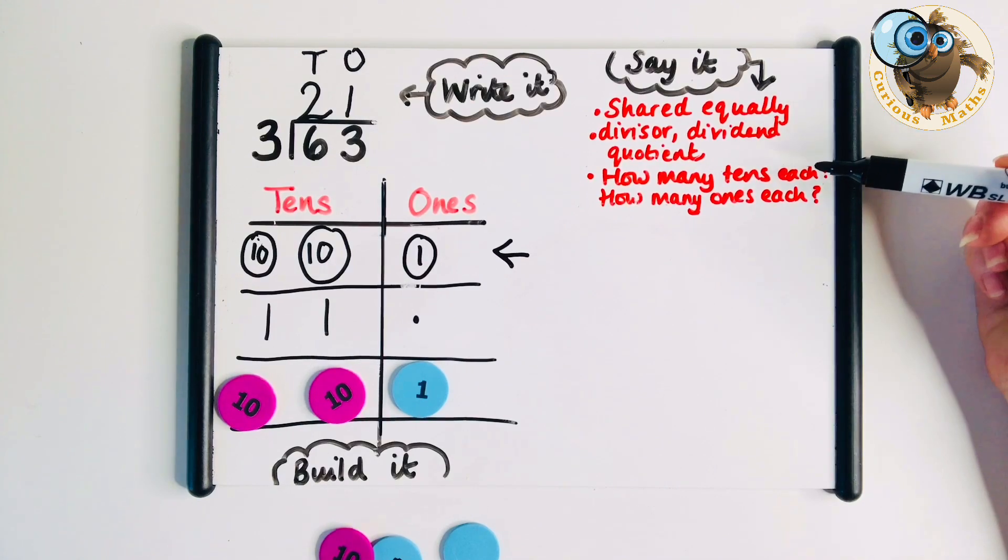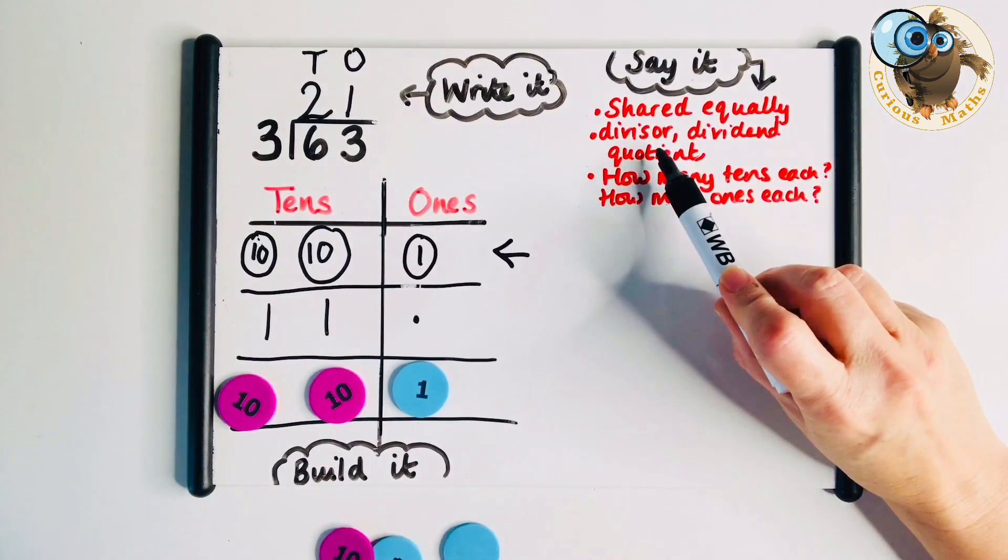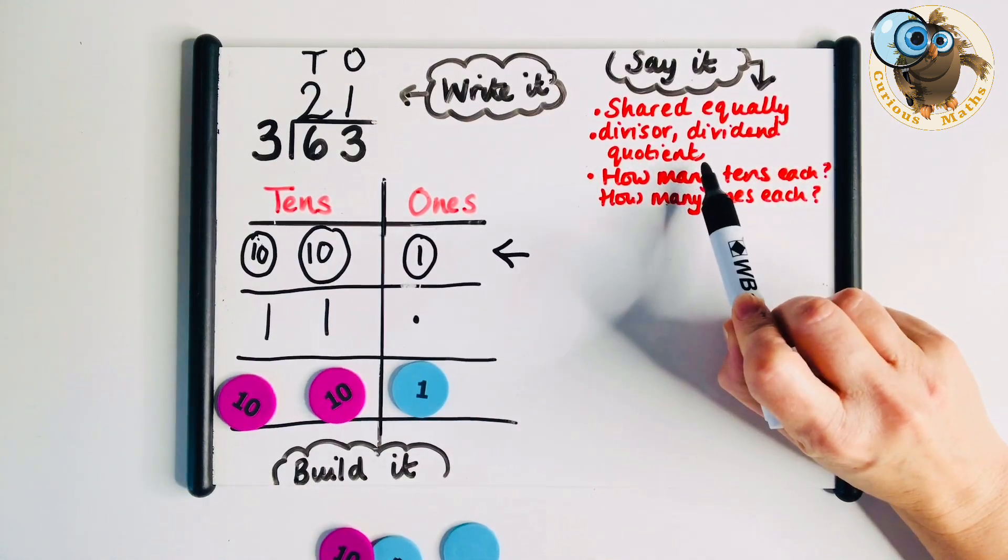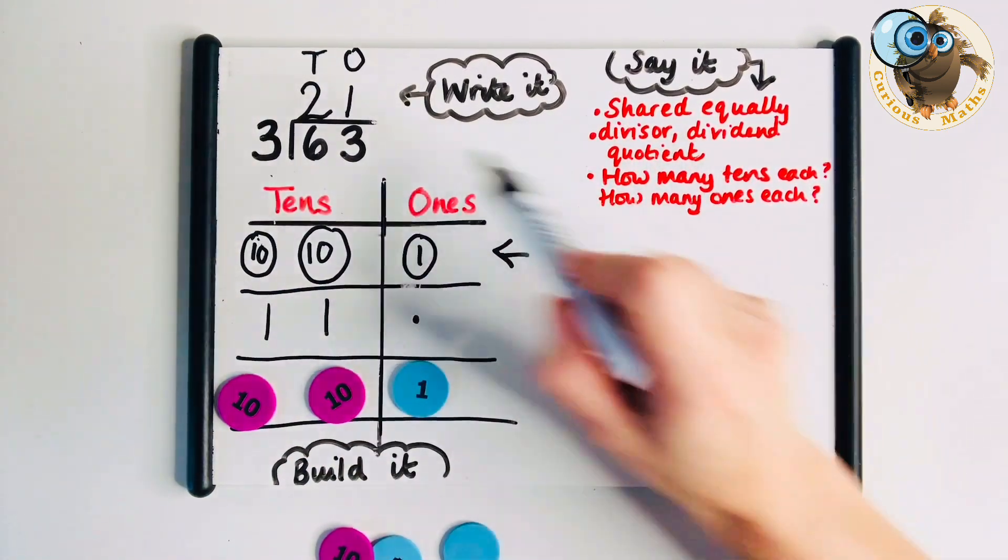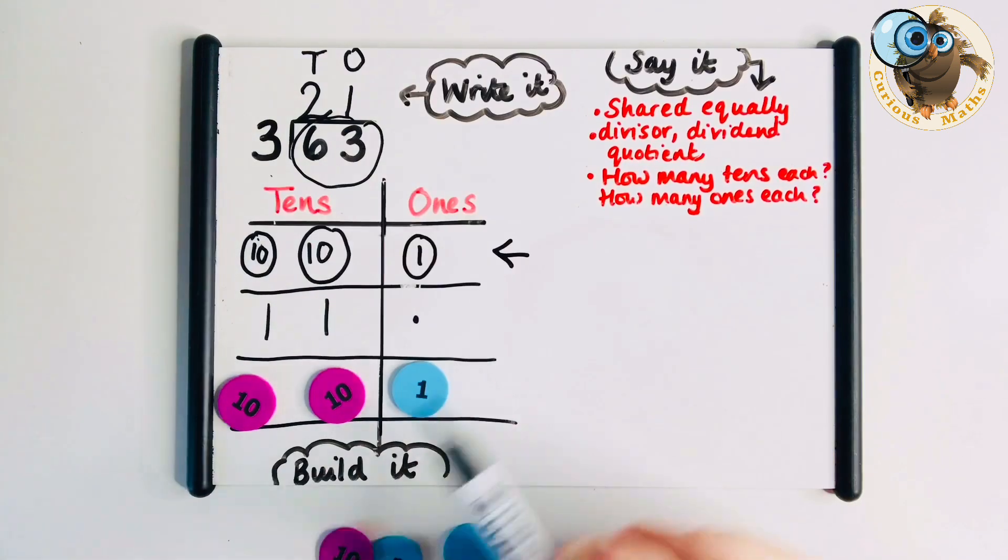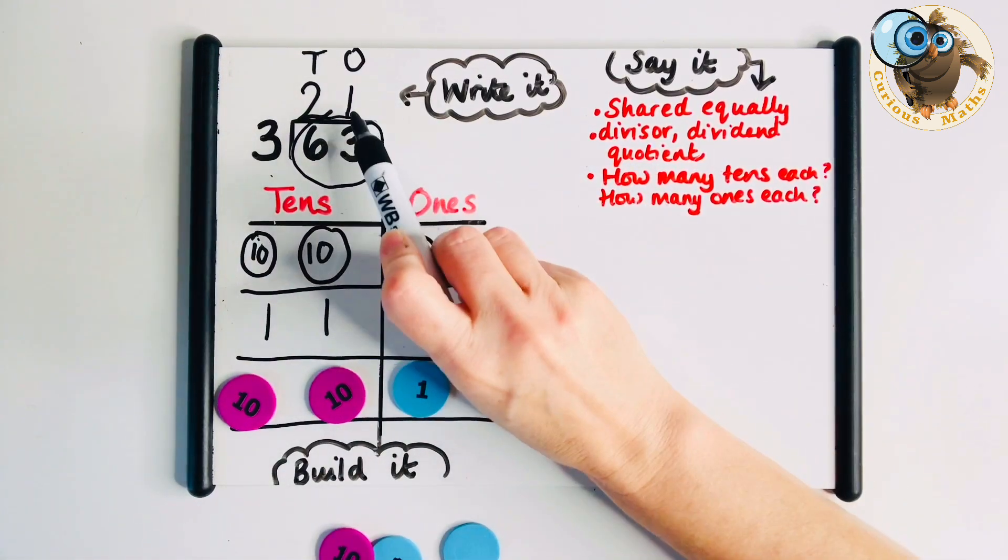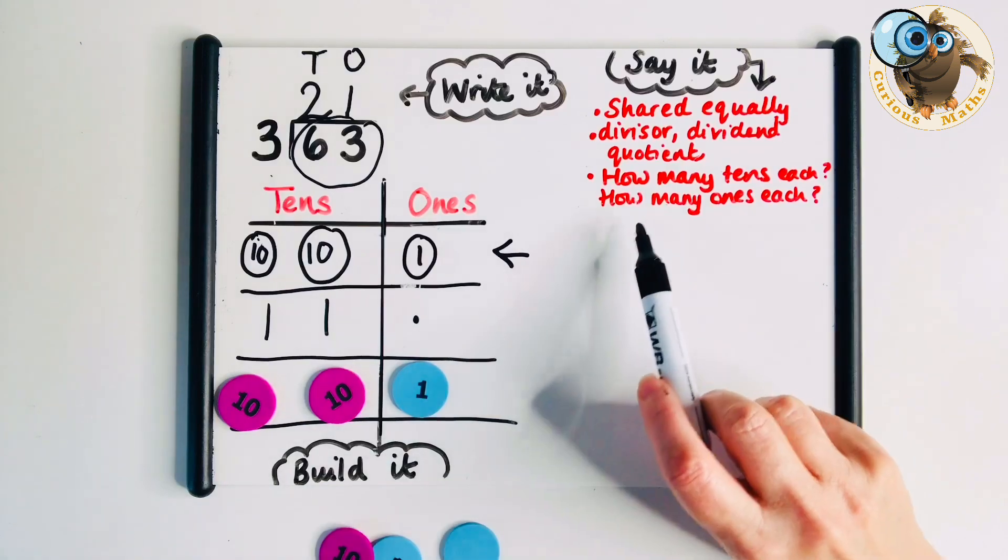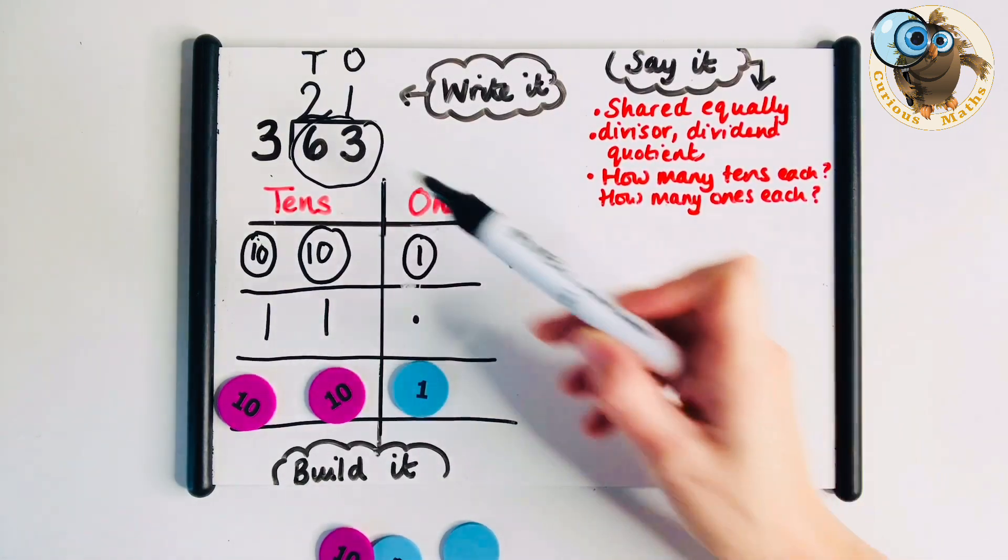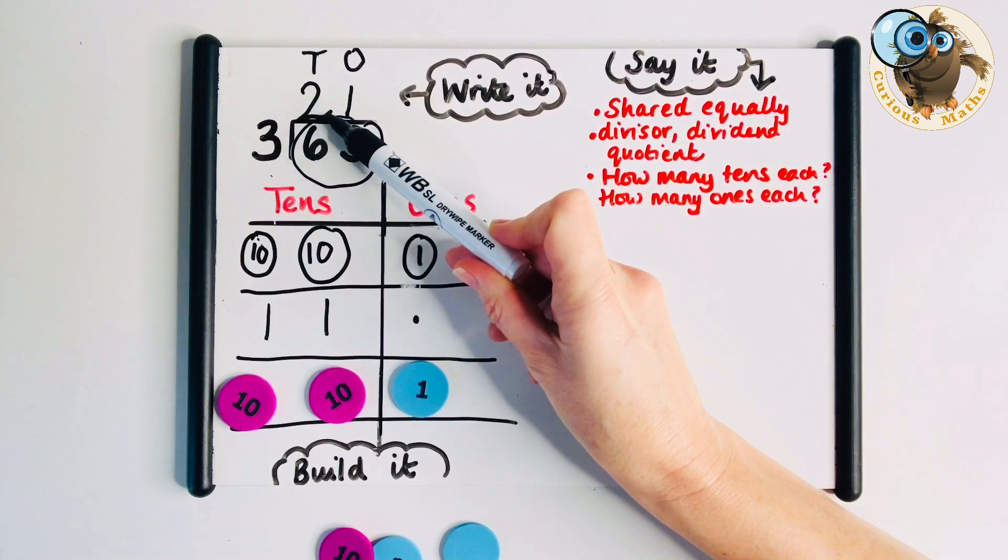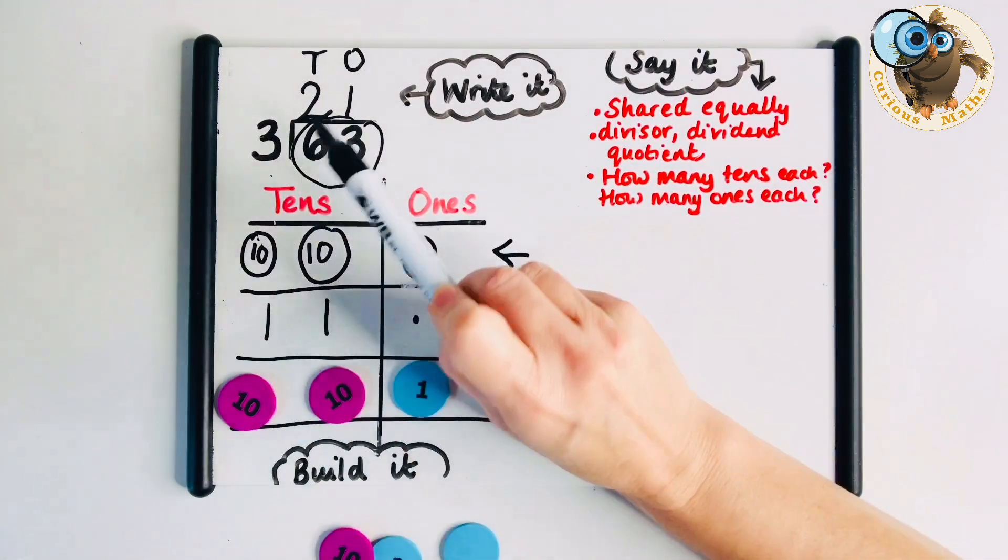The language we can use and teach - we want to emphasise sharing equally at this stage. We could use words like divisor, dividend and quotient. Your 3 here is your divisor, your dividend is how many you've got altogether, and your quotient is your answer of 21. We ask questions like how many tens each and how many ones each, just to make sure children appreciate that 2 represents 2 tens.